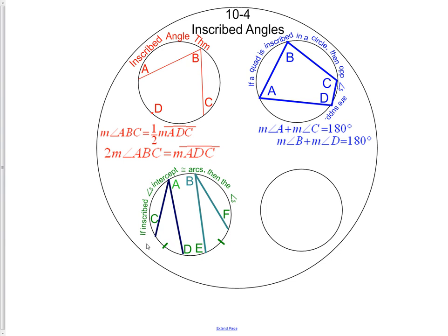Another theorem we have is if inscribed angles which intercept congruent arcs, then the angles are congruent. What that says is if the arc from C to D is the same as or congruent to the arc E to F, then angle A is congruent to angle B. Therefore we know angle A is congruent to angle B.